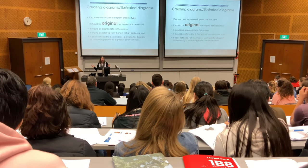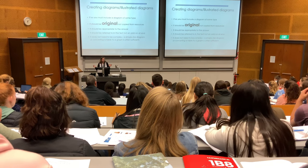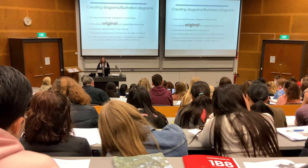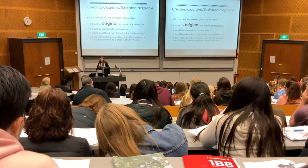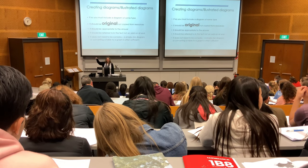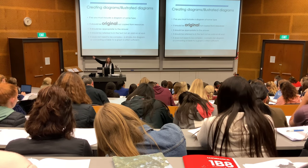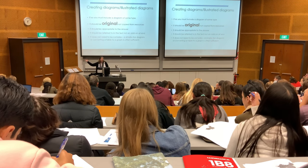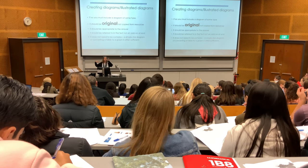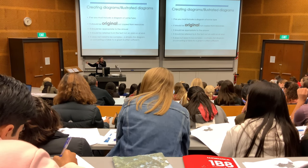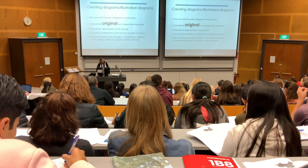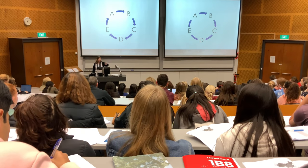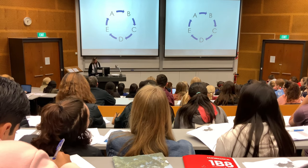Examiners dislike it when people just copy a graph or map from the resource booklet. Diagrams should be appropriate to the answer, referred to in the text and not simply an add-on. You would say 'Figure 1 shows...' — taking your eye from the words to the diagram and back to the words again. They shouldn't be too complex. For example, a poverty cycle: A leads to B and so on. Or a flow diagram.